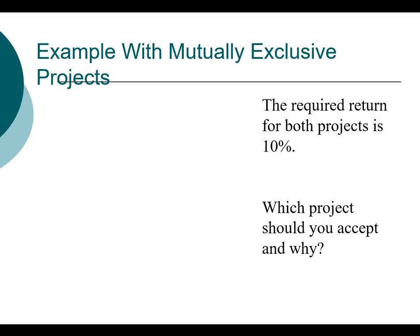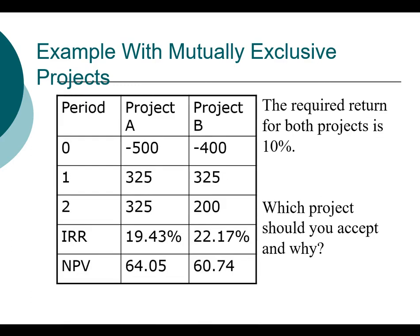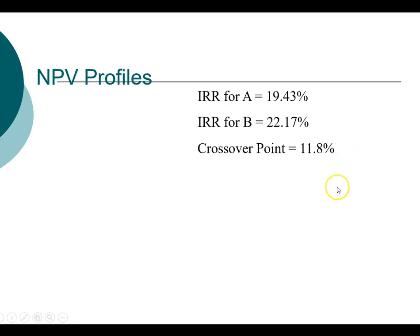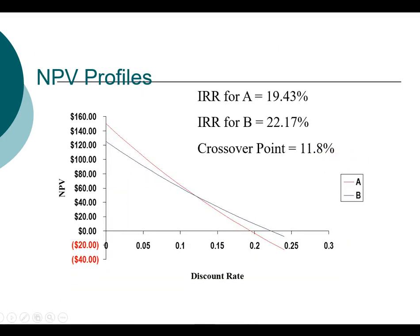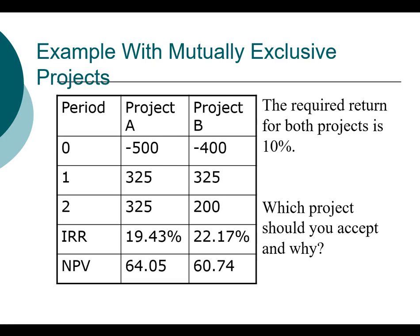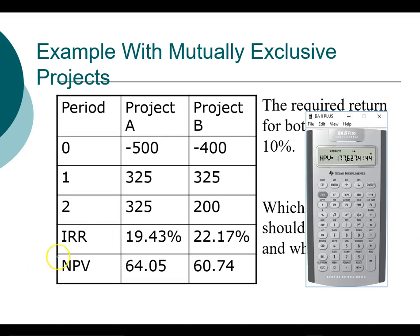Let's take a look at two projects: project A and project B. The required return for both projects is 10%. For this particular example, we want to compute the net present value and also the internal rate of return. We do have a conflict if you go through the calculation, so let's do that first.